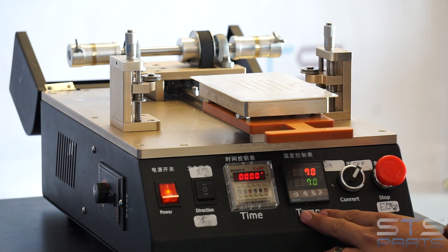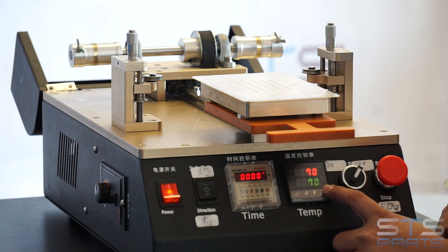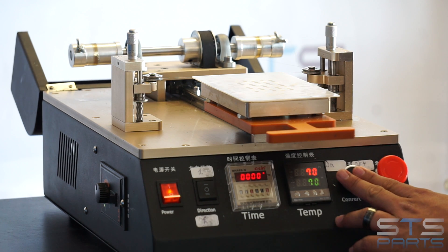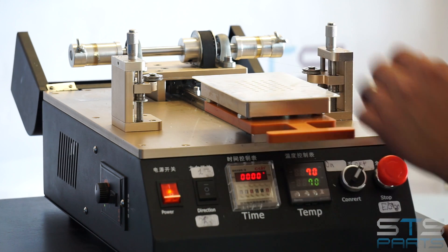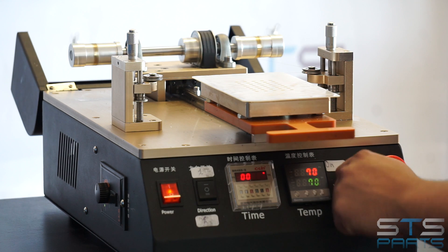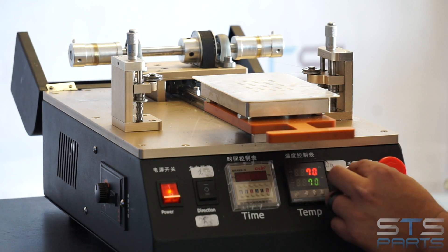Here you have the temperature controller. We have set it up at 70 degrees. This is usually the temperature that we use to split our screens. And then here, it's basically your on and off switch when you're working with glass splitting. This is an emergency stop. So, if we turn it on and for some reason you have to stop, you can click that and turn it off.